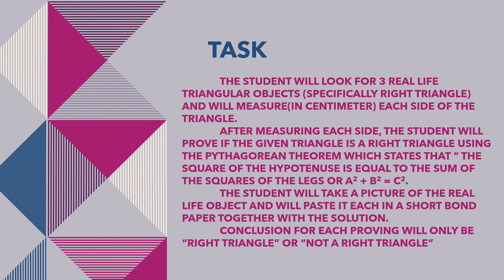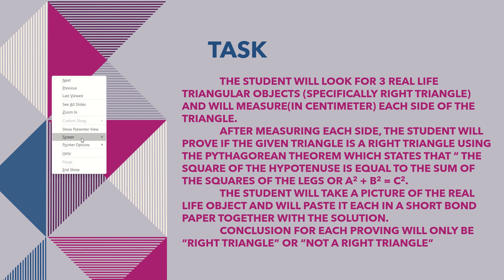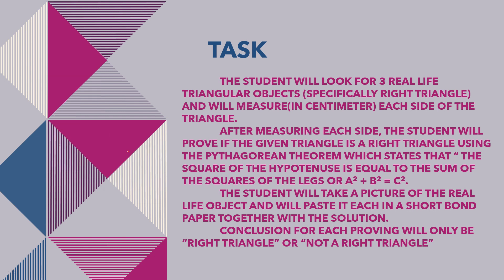After measuring each side, the student will prove if the given triangle is a right triangle using the Pythagorean theorem, which states that the square of the hypotenuse — the hypotenuse being the longest side — is equal to the sum of the squares of the legs. Or: a squared plus b squared is equal to c squared, where a and b are the legs of the right triangle, and c is the hypotenuse or longest side.